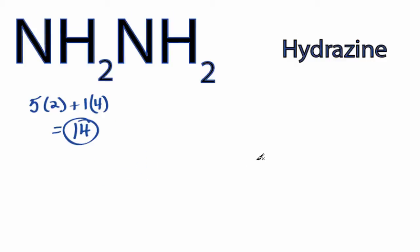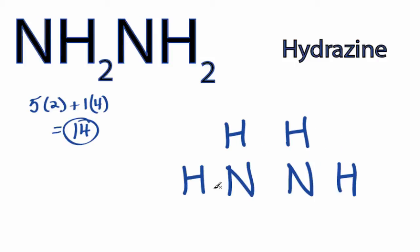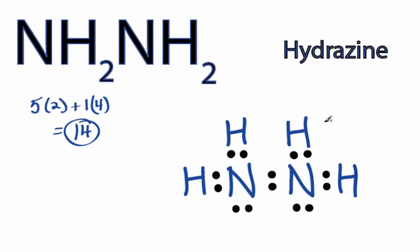Hydrogens go on the outside of the Lewis structure, so we'll put the two Nitrogens in the center, and then we'll put the Hydrogens around them. Place a pair of electrons between atoms to form chemical bonds. We've used 2, 4, 6, 8, 10, and then back to the center to complete the octets, 12, 14, on the Nitrogen atom.